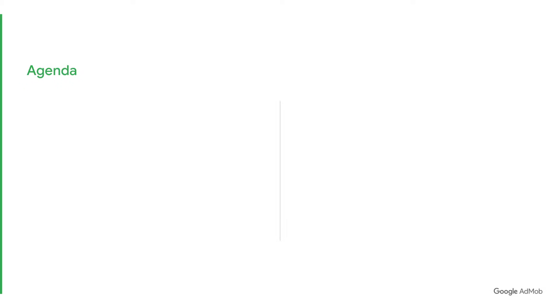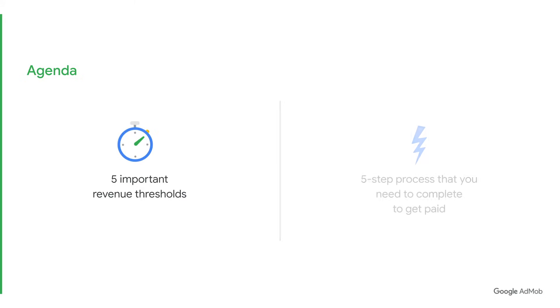Welcome back to another Google AdMob tutorial. Today, I'll be showing you how to get your account set up to start receiving AdMob payments. Before going into the practical steps, here's a quick overview of the two topics we'll be covering in this video. First, we will highlight five revenue thresholds you must meet to be eligible to receive all possible payments through AdMob. After that, we will walk you through the five-step process you need to complete before we can issue your first AdMob payment.